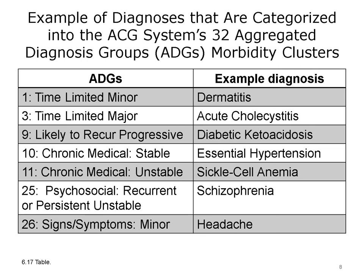To give you a feel of how these various systems work and to suggest that transparency is important, this table opens the black box a little bit to show you how one of the markers of the ACG system reflects both epidemiologic and disease patterns. The original morbidity clusters were called aggregated diagnosis groups, ADGs. The left side of the slide reflects some of these ADG categories, and on the right side are some common conditions that go into each one. For example, if a person has one or more ICD codes that fall into epidemiologically similar categories, they would get categorized as having that risk factor — such as a chronic condition that is stable, a chronic condition that is unstable, a serious psychiatric or psychosocial condition, or a condition likely to become progressively worse.